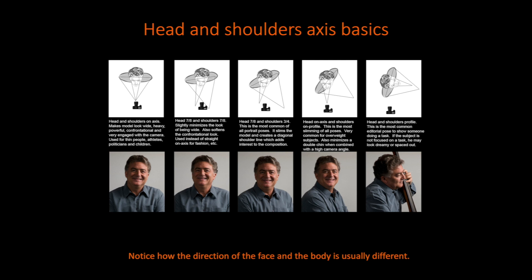The second-to-last one is the head on axis and shoulders on the profile, so the body is turned quite a bit to the side. This is a very good pose for slimming your subject and is very common for overweight subjects. It also minimizes a double chin when combined with a high camera angle. In this shot, the shoulders axis is turned to one side about a 45-degree angle, and then the eyes are looking right at the camera.